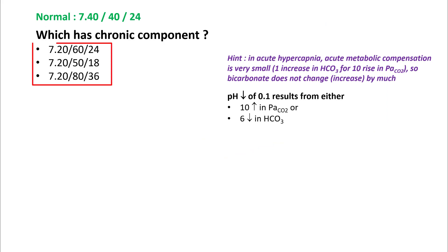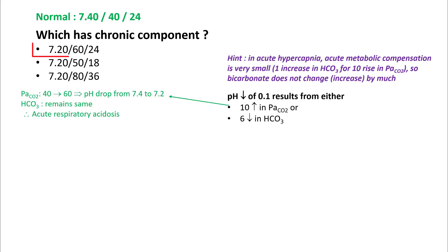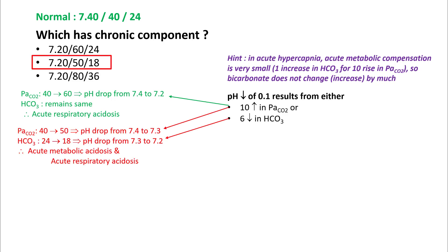Let's do an example. We have three ABGs — which one has a chronic component? First ABG shows pCO2 of 60 and pH of 7.2. We know that an increase of 10 in CO2 drops your pH by 0.1, so a rise in CO2 from 40 to 60 corresponds to a pH drop from 7.4 to 7.2, and bicarb will remain the same because compensation is minimal — this patient has acute respiratory acidosis, no chronic component. The second ABG: PaCO2 has increased from 40 to 50, so that should drop your pH from 7.4 to 7.3; however, the bicarb has also dropped by 6 points, dropping pH by another 0.1, bringing it to 7.2.